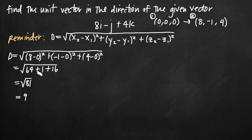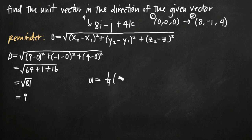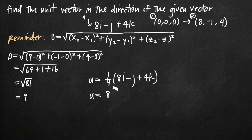What that tells us is that if we want to find a unit vector in the same direction, we just need to multiply our original vector by one ninth, because the length associated with this vector is 9. If we divide the whole expression by 9, we get a vector with length 1. So our unit vector u equals one ninth times (8i minus j plus 4k). Distributing the one ninth, we get (8/9)i minus (1/9)j plus (4/9)k. This is the expression for our unit vector.